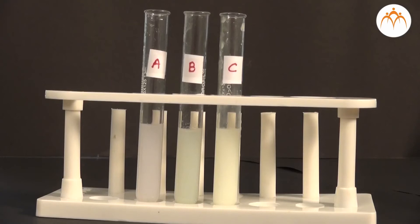In test tube A, precipitate formed is white in color. In test tube B, precipitate formed is light yellow in color. In test tube C, precipitate formed is dark yellow in color.